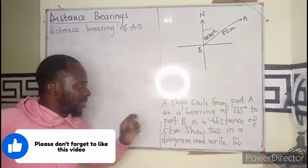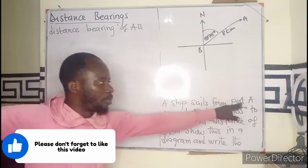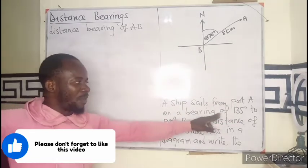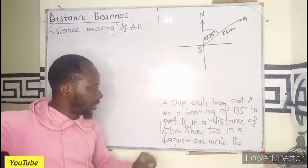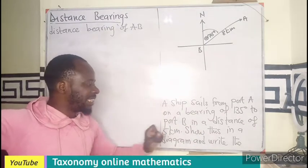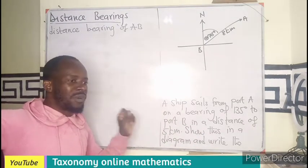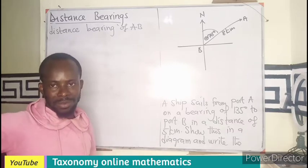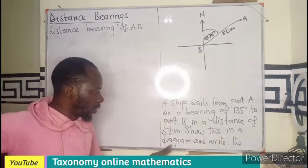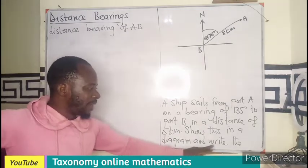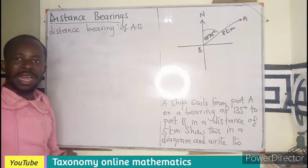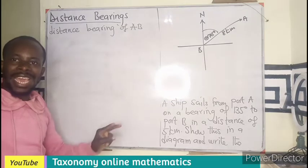We have a ship that sails from port A on a bearing of 135 degrees to port B, a distance of 5 kilometers. We are to show this on a diagram, then write the distance bearing form of AB.